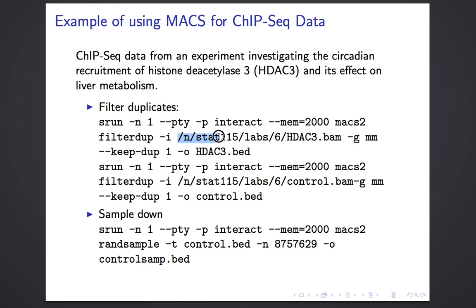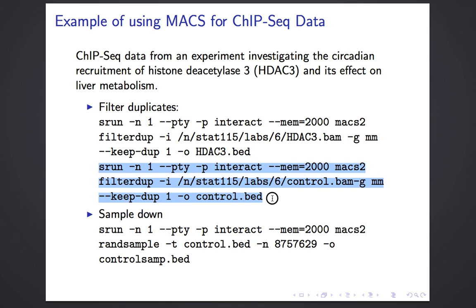The input file is specified with -i, and by -g I specify the genome size. Since my experiment files are from the mouse genome, I specify mm. Then I set how many duplicates to keep in one position — the default is one and most people use one. Then I specify my output file, and I do the same thing for the control file.